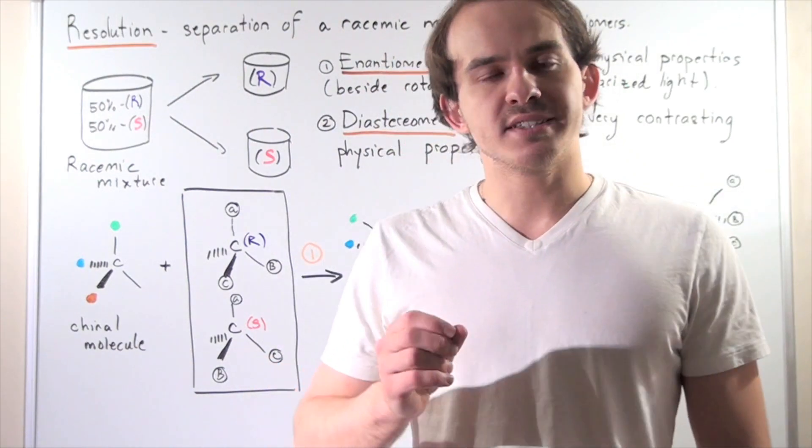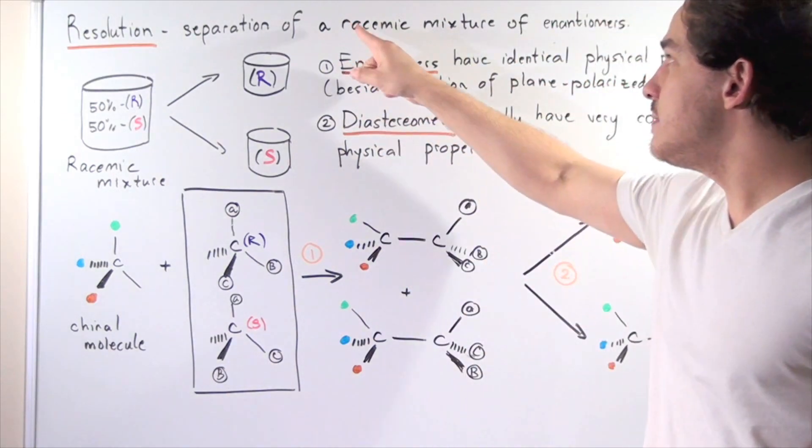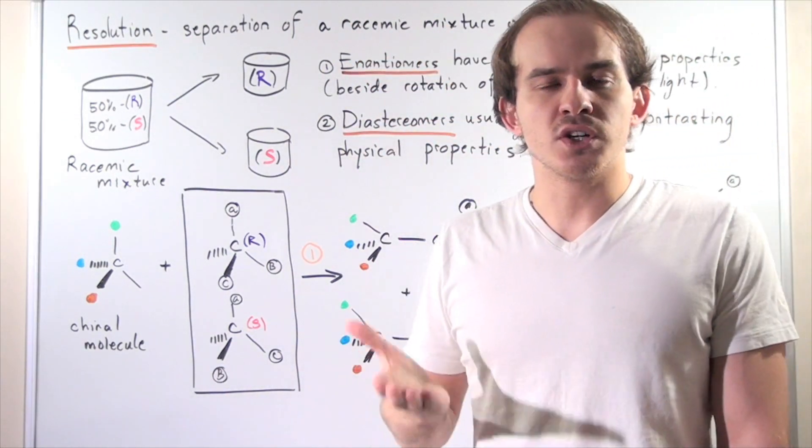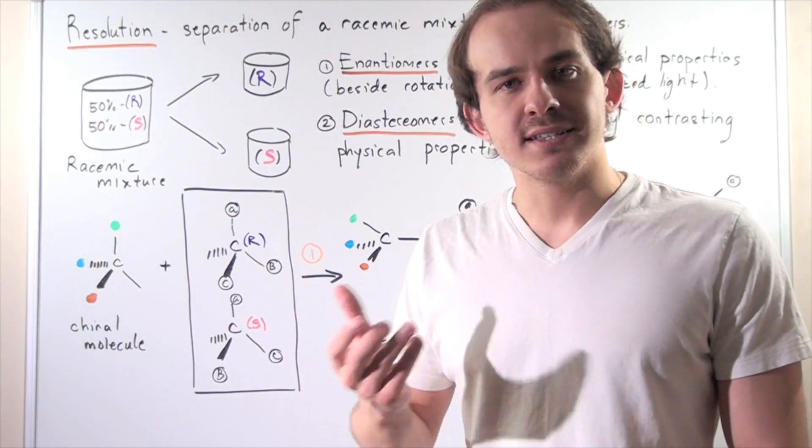Resolution is the separation of a racemic mixture of enantiomers. A racemic mixture is simply a mixture composed of 50% of the R enantiomer and 50% of the S enantiomer.